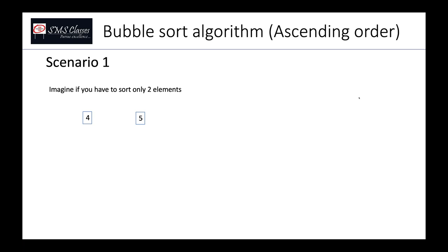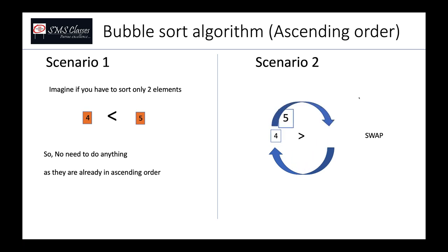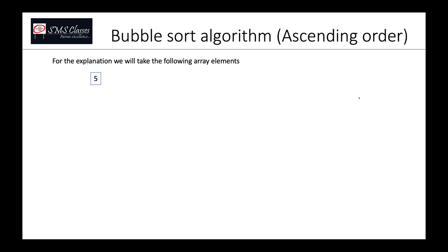Let's get started with bubble sort algorithm in ascending order. Imagine you have to sort only two elements — four being the first and five being the second. Here four is already less than five, so no need to do anything. But if five is the first element and four is the second, five is greater than four so we must swap. This key swap process is the foundation of bubble sort.